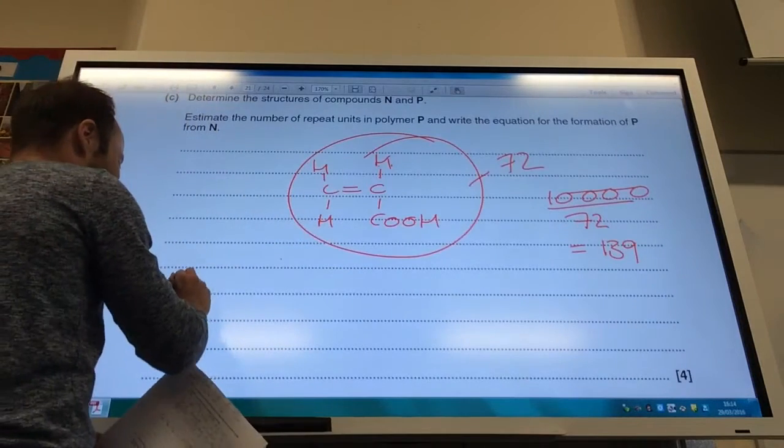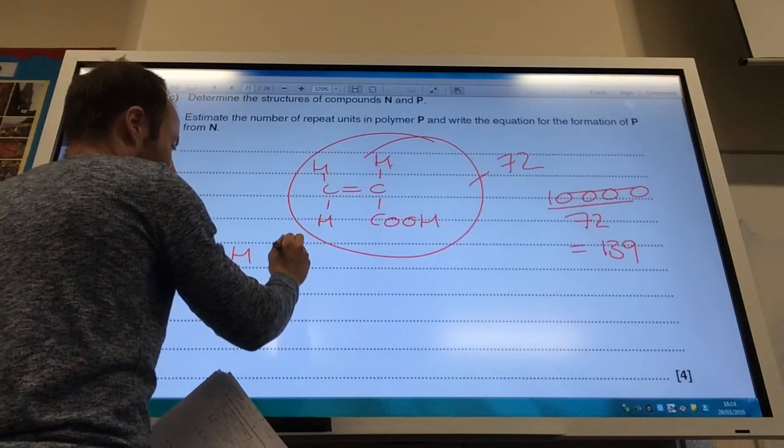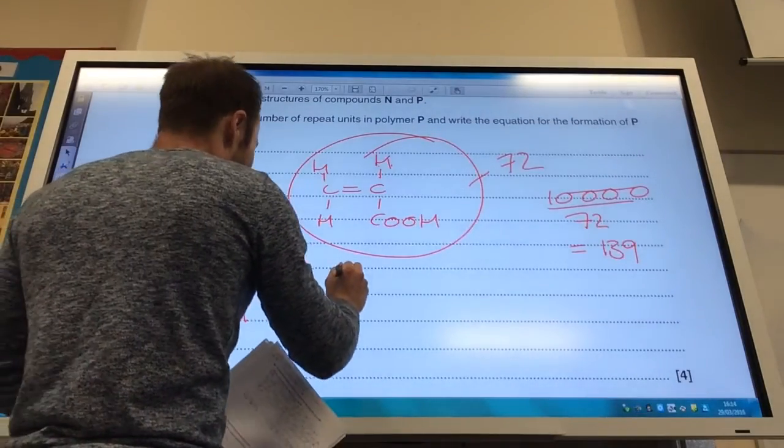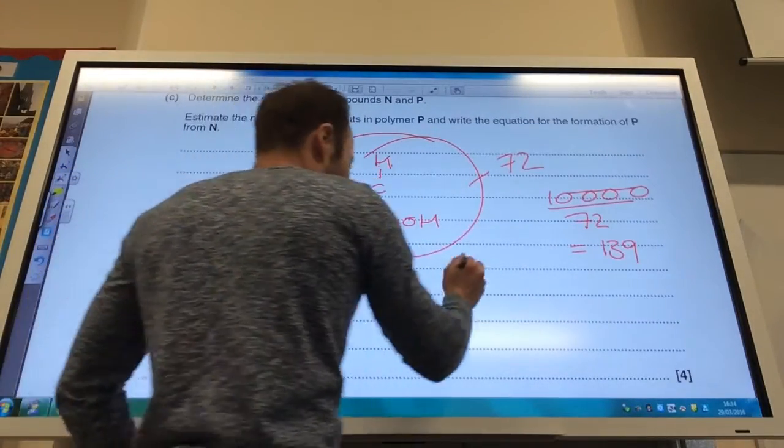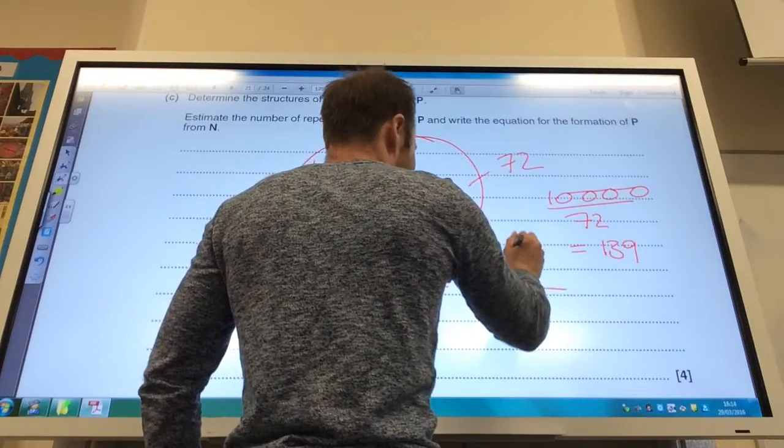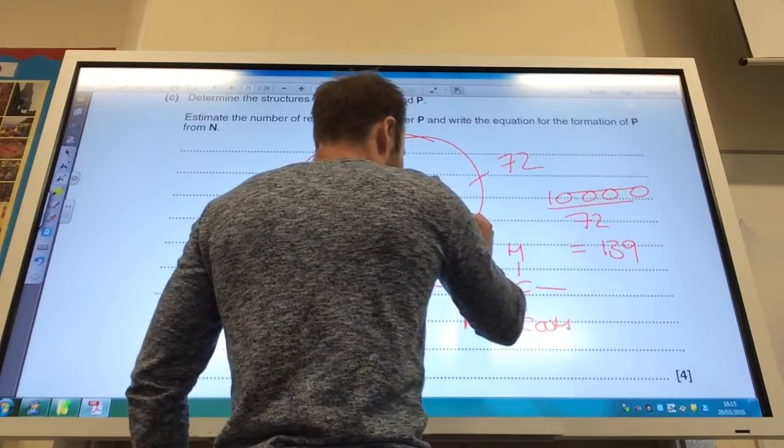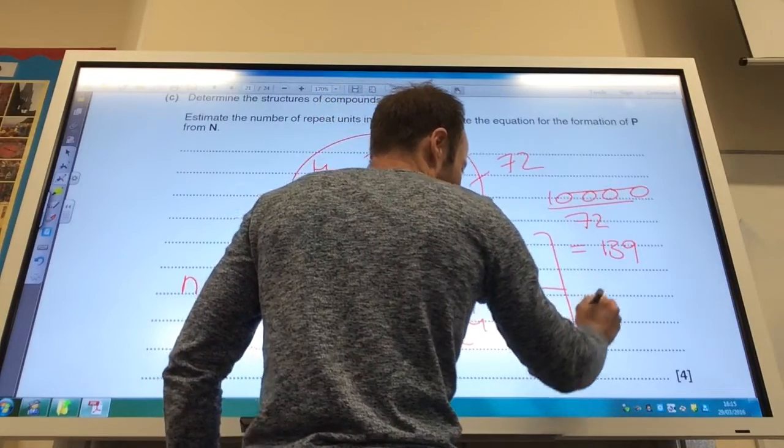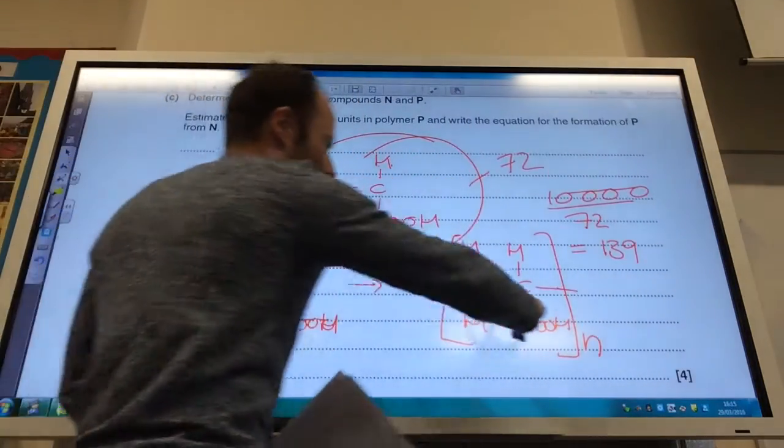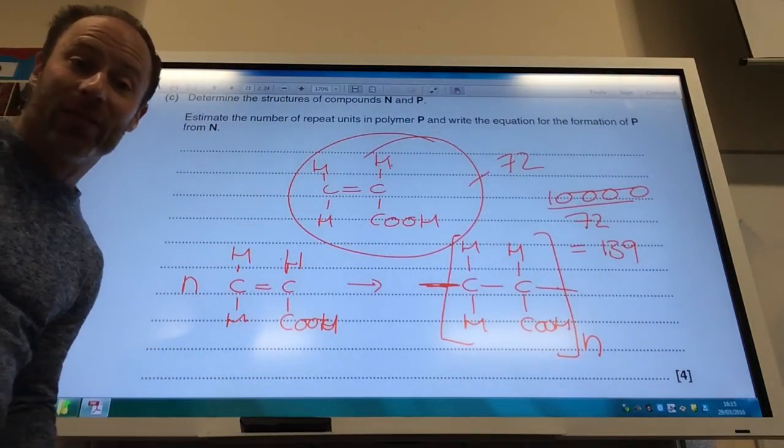Write an equation, so I'm going to take N of those. So N, and that is going to give me, remember, it just opens up. Keep it as an H shape, it makes your life so much easier. Put your square brackets around, and then you put an N there. So don't forget your N's. You start with N number of those, and then you get a chain length of N length.